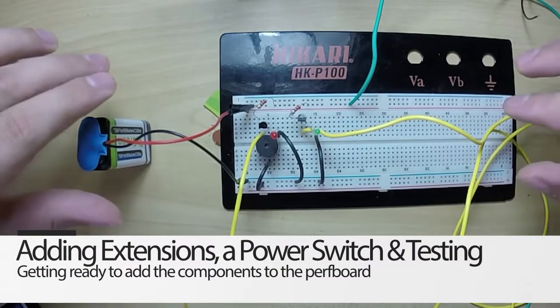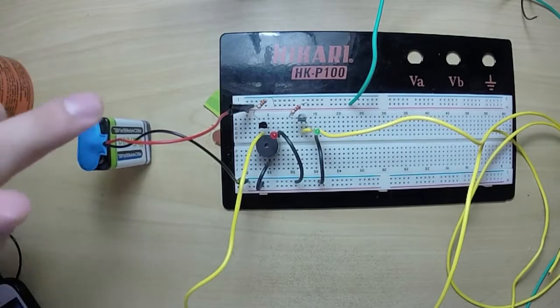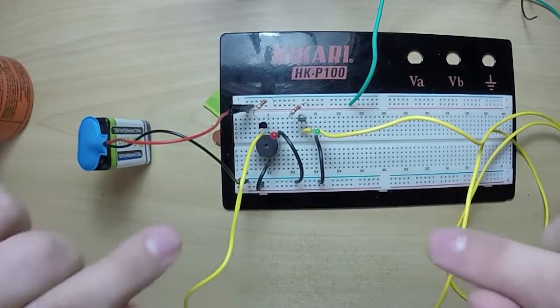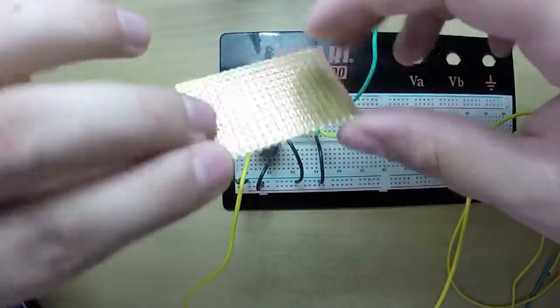What's up everybody? Welcome to the second part of the tutorial on making the water level indicator. Today we're going to be taking the circuit from the breadboard and making a permanent installation on some perfboard.